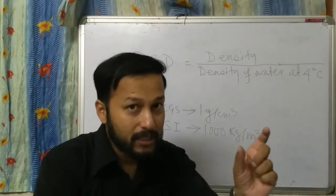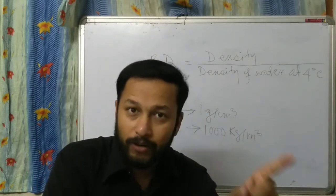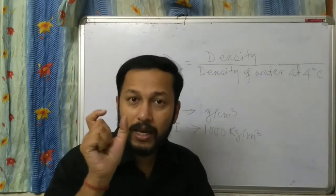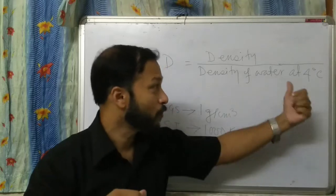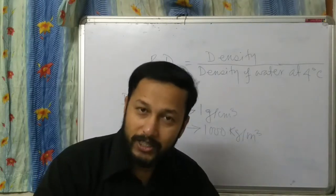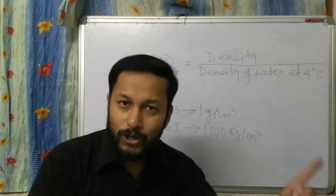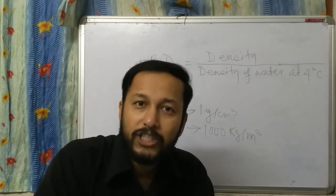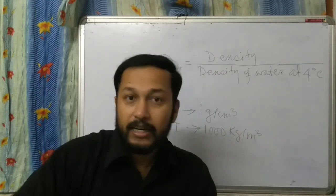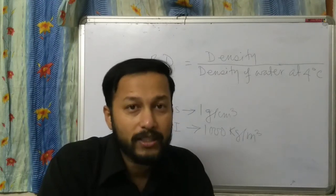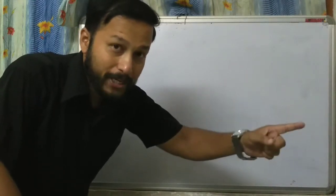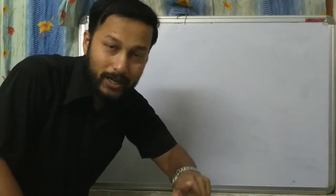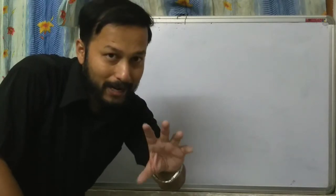So if asked what the unit of relative density is, the answer is: relative density is just a ratio, that is why it has no unit. The difference between density and relative density: density means mass per unit volume, while relative density means the density of that object divided by the density of water at four degrees Celsius.